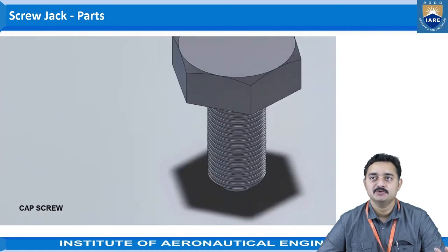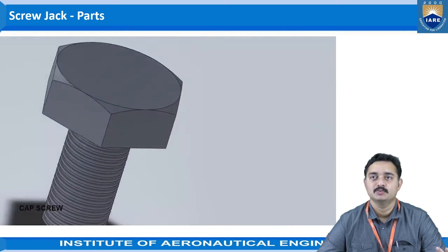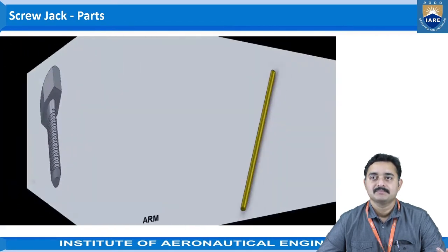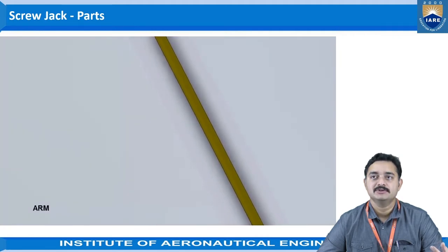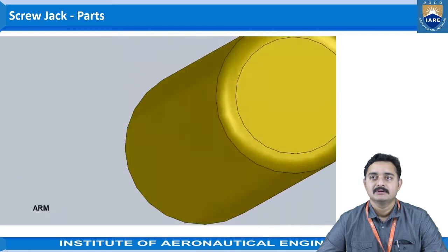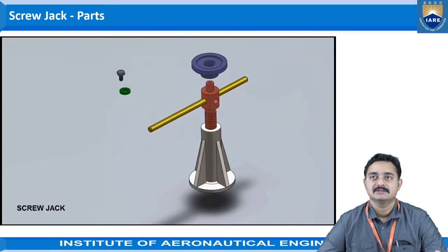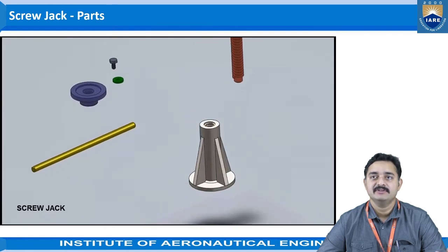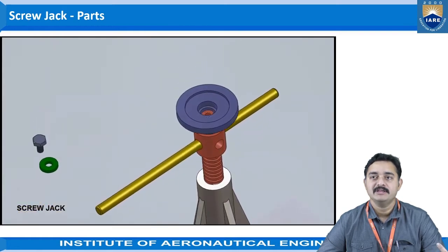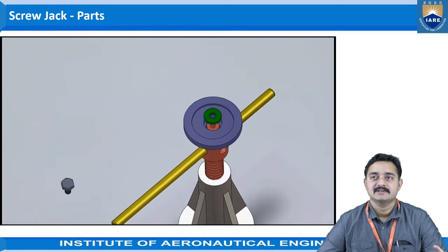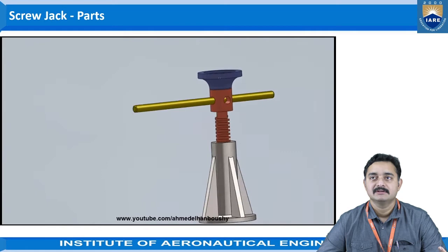The cap screw is used for fixing the washer and screw head onto the screw, and the shaft or arm is used to apply the effort onto the screw jack. In this way you can see the parts of the screw jack: the screw installed into the body, the support — also called the screw head — the washer, and the cap screw.